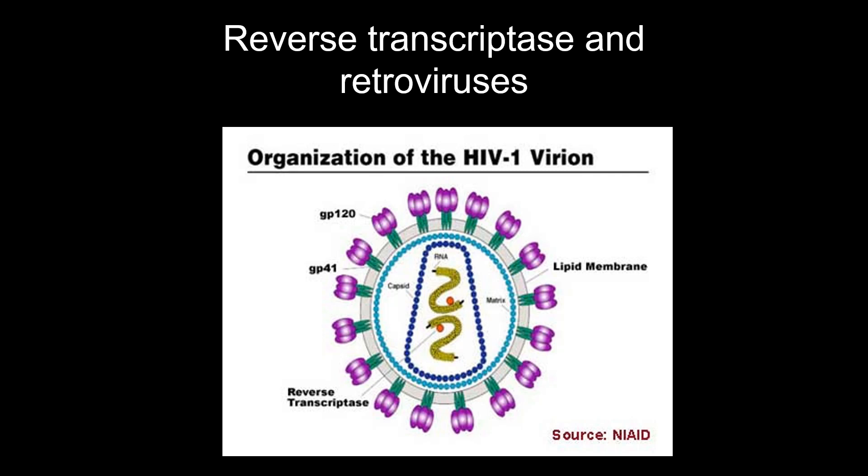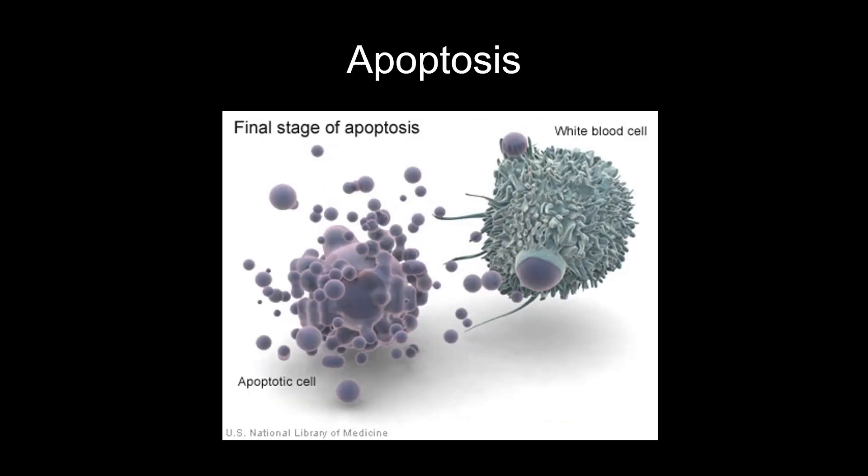Reverse transcriptase is the enzyme that reverses transcription — if transcription goes DNA to RNA, reverse transcription goes RNA to DNA. Viruses that contain reverse transcriptase are called retroviruses. The most notable retrovirus is HIV: it has an RNA genome, and once inside a cell, reverse transcriptase converts that RNA to DNA, which then gets incorporated into the host cell's genome.